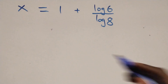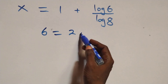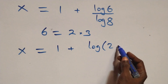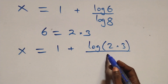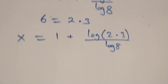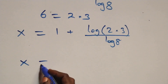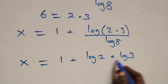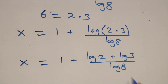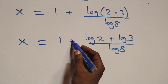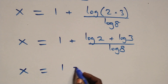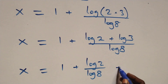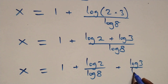Then, next step here, we can write 6 as 2 times 3, and applying the product rule of logarithms again, x equals to 1 plus log(2 times 3) over log 8, which becomes x equals to 1 plus log 2 over log 8 plus log 3 over log 8.